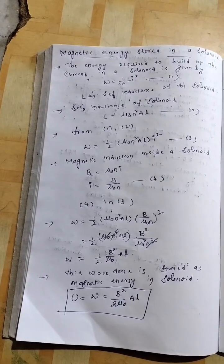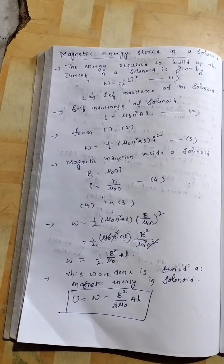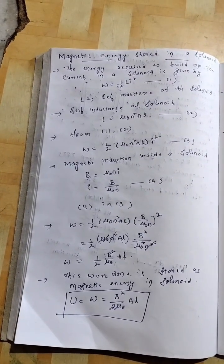Now, this work done is stored as magnetic energy in solenoid. So, u equal to w equal to b square by 2 mu0 a into l. Thank you.